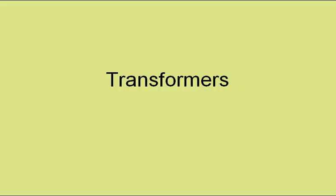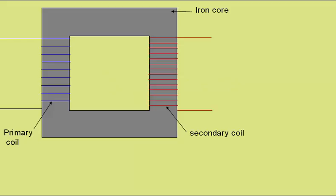Transformers consist of an iron core around which is wrapped a primary coil of wire and a secondary coil of wire. The secondary coil can have more turns than the primary coil, or the other way around — more about this later.